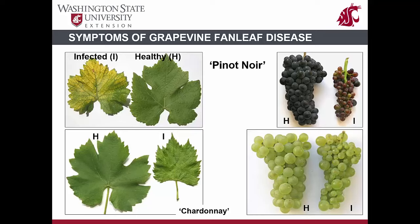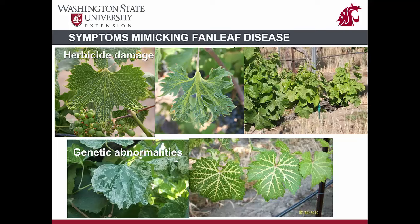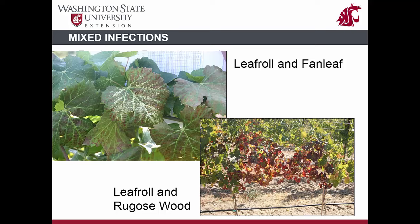Fan leaf virus can reduce fruit set by up to 80%, and clusters contain large and small berries. At fruit maturity, clusters on affected vines are straggly with large and small berries. Such a reduction in fruit production, which varies with cultivar and season, may result in severe economic loss. It is important to note that herbicide damage and genetic factors can cause leaf deformations that look like symptoms of fan leaf disease.